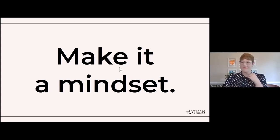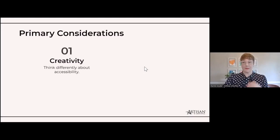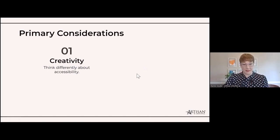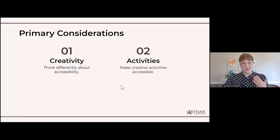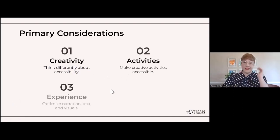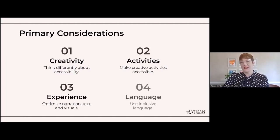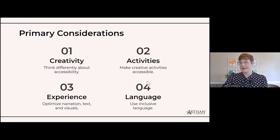The four things I really want to talk about for accessibility are: first, creativity — how do you keep creativity in the accessibility process; then activities — making those creative ideas accessible; experience — the big picture of the learning experience, like narration and visuals; and finally, language — using inclusive language as you make things accessible.